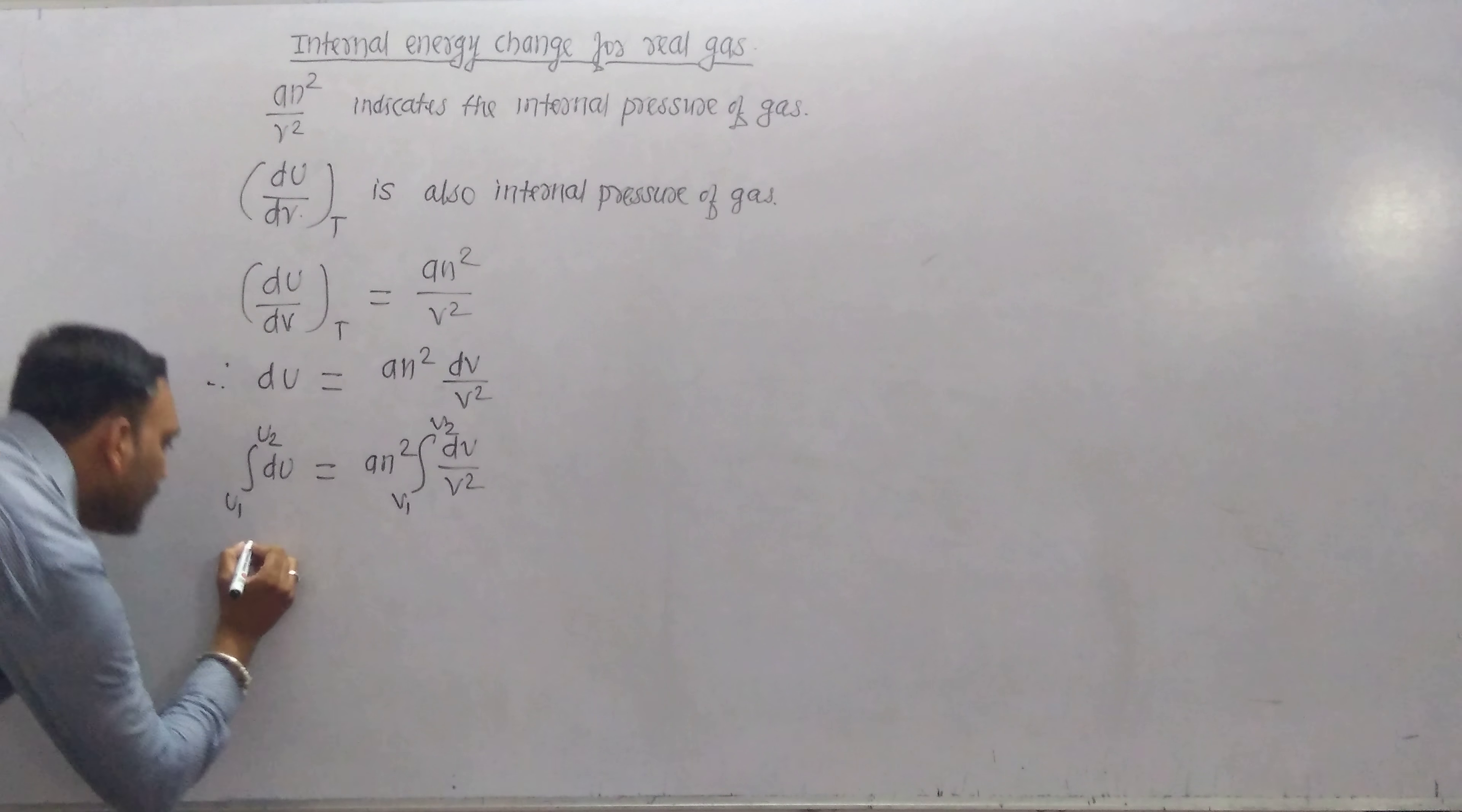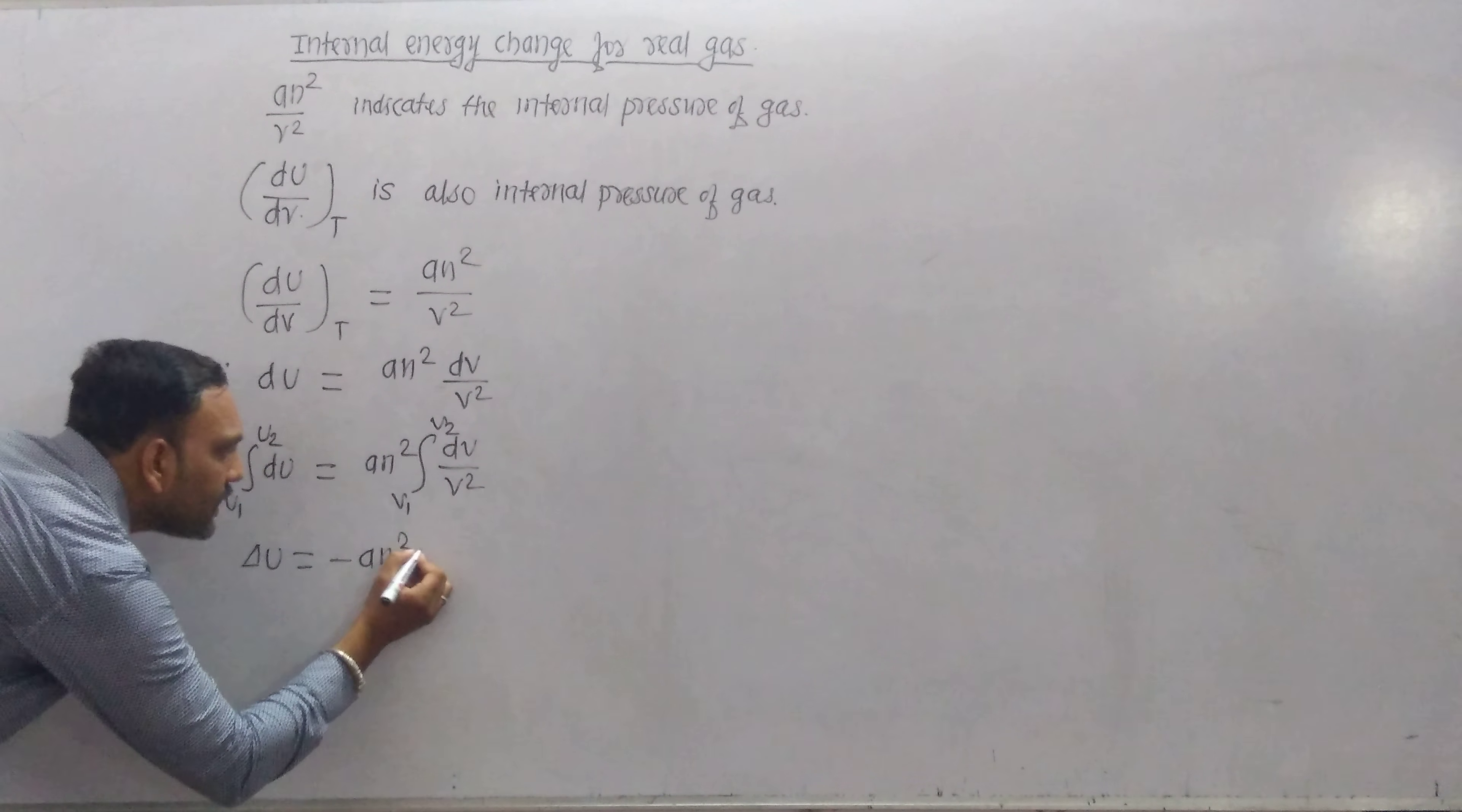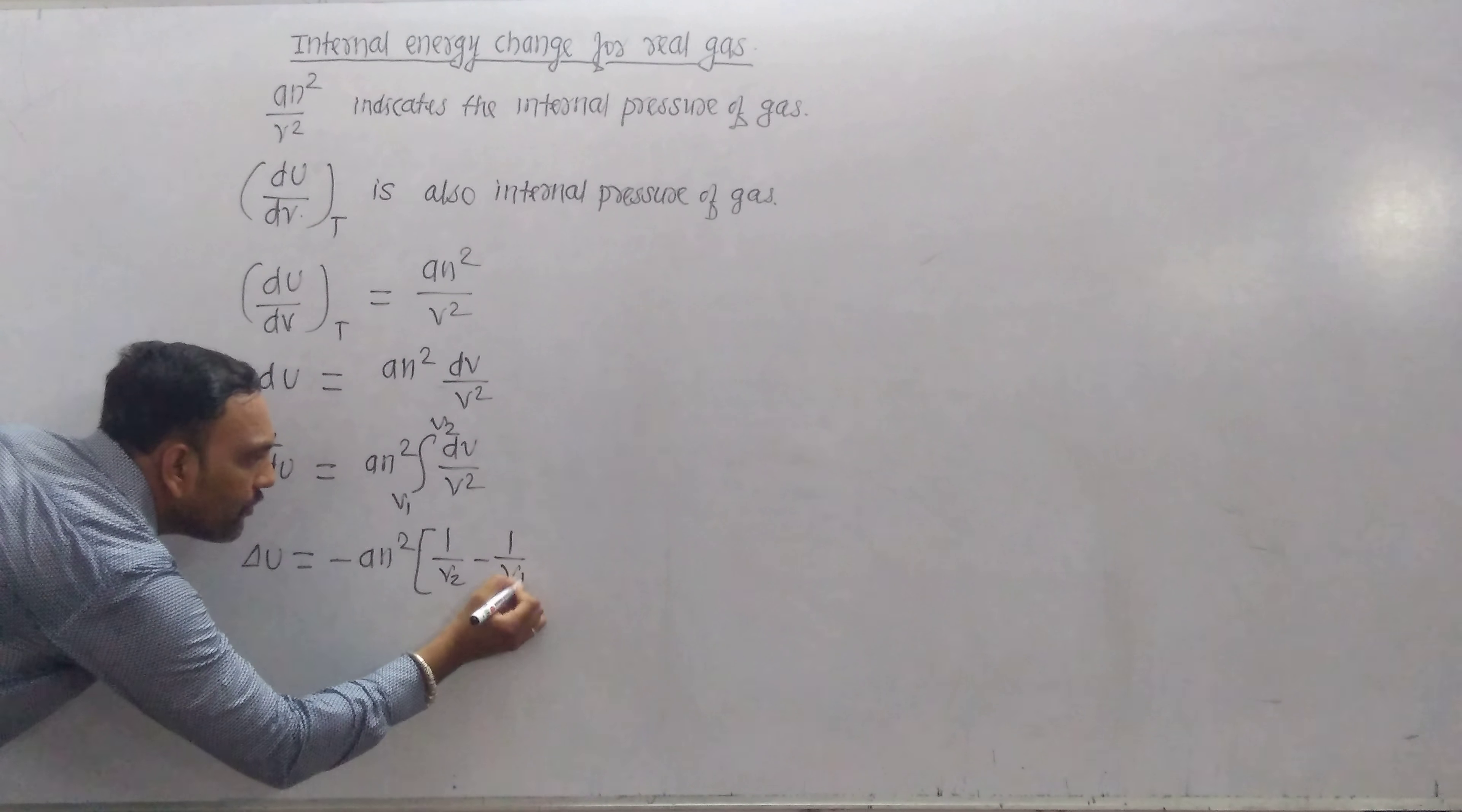This can also be written as ΔU equals -AN² times (1/V₂ - 1/V₁).